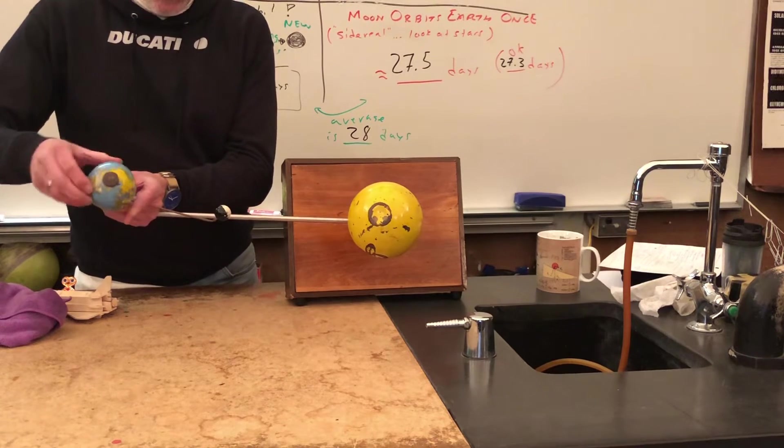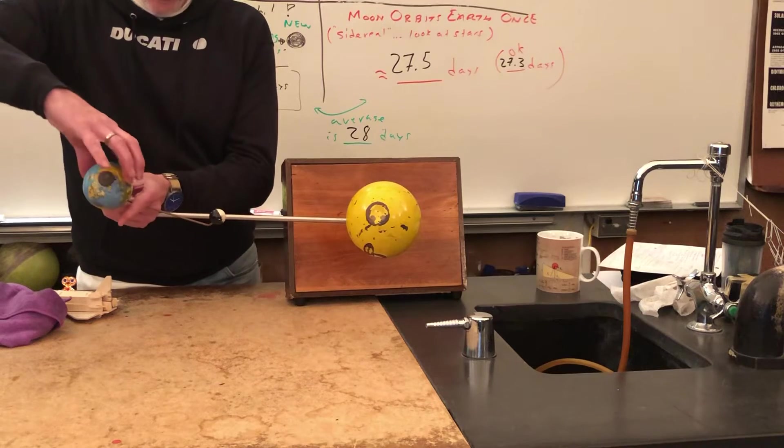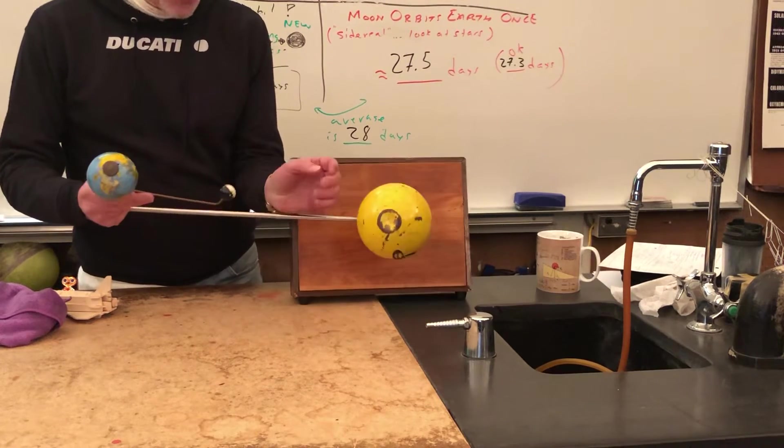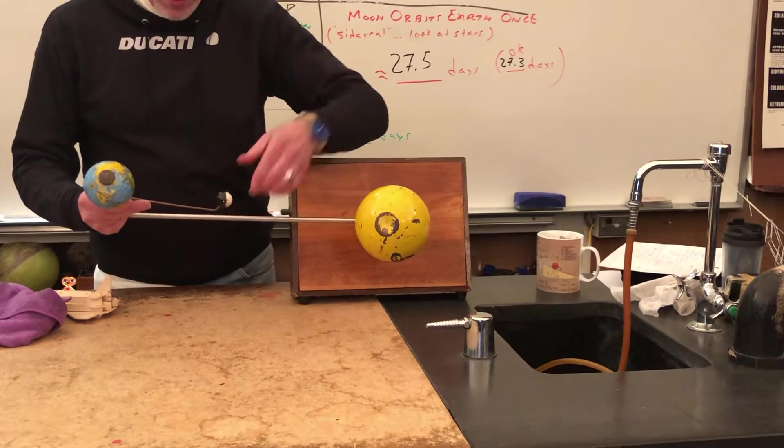So if our side is facing sun, we're having day. And then if we spin out of the light, we're having night. So that's a basic idea to help us understand this.